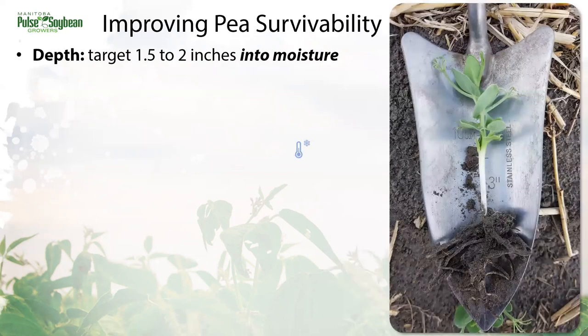A few quick research updates on observations that might be impacting plant establishment: in terms of seeding depth, targeting one and a half to two inch depths and placing seeds into moisture will help minimize seeds left waiting for rain or stranded near the surface. Pea cotyledons stay below ground, so they can emerge from depth much more easily than soybeans.